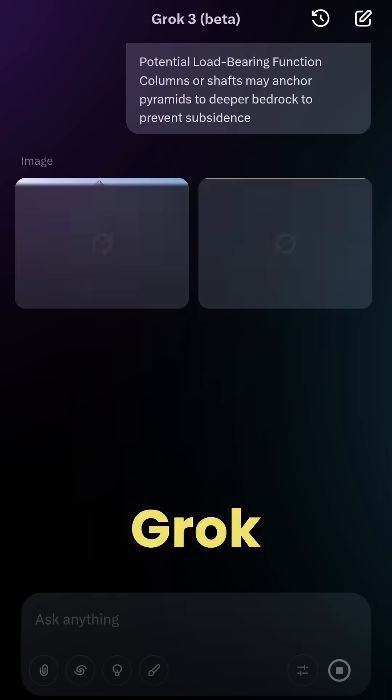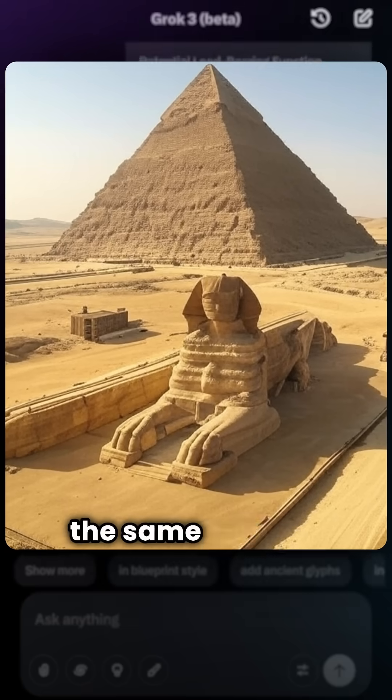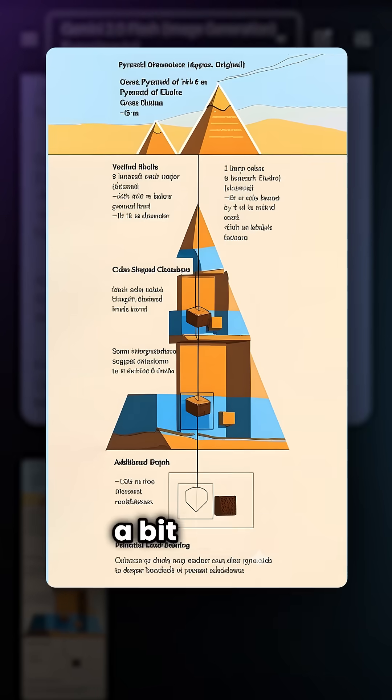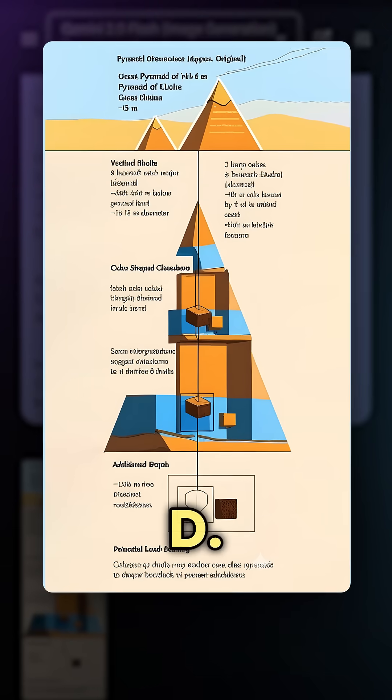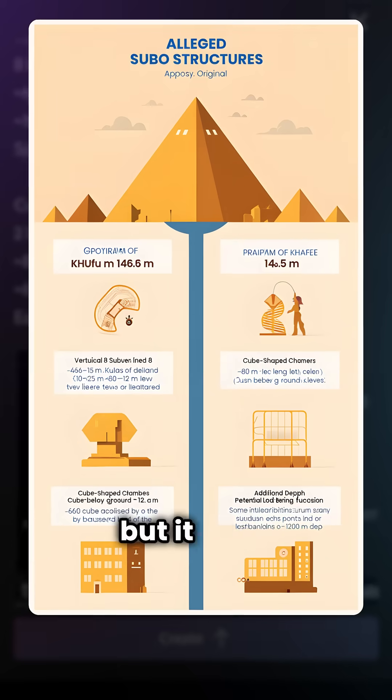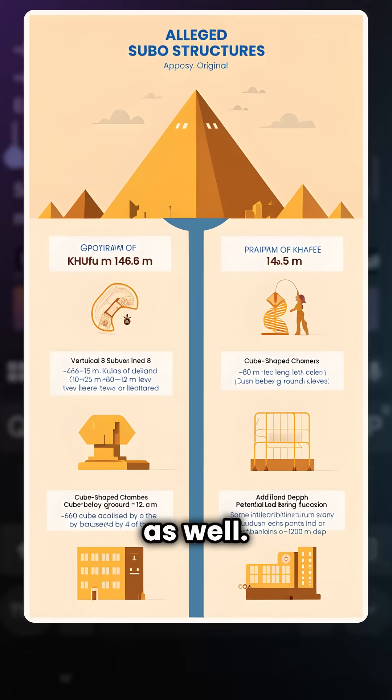Here's what Grok created using the same prompt — I'd give this an F, honestly. Gemini did a bit better; I'd give it a D. I also tried Reeve, but it got a D as well.